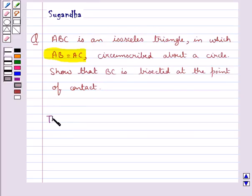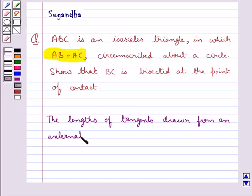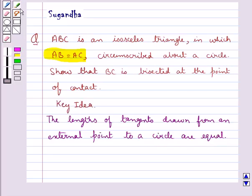We know that the lengths of tangents drawn from an external point to a circle are equal. This is the key idea for this question.